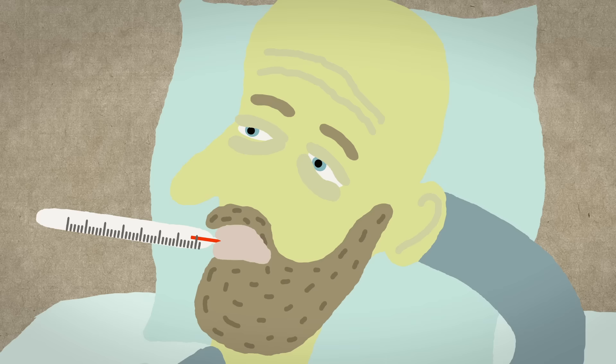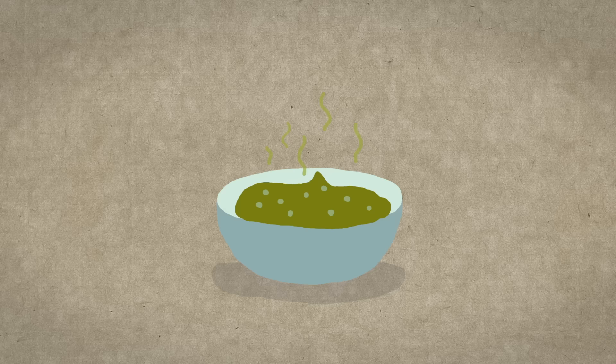Microbes like bacteria and fungi invade food and feed off its nutrients. Some of these can cause diseases like listeria and botulism. Others just turn edibles into a smelly, slimy, moldy mess.